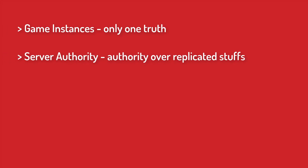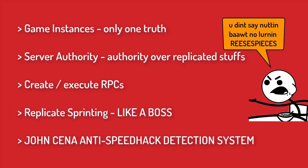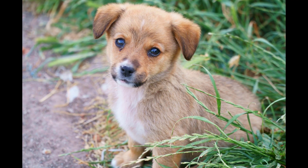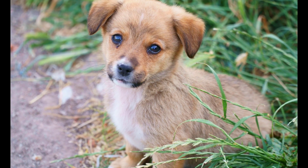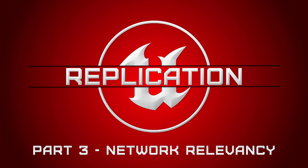So let's quickly recap. In this video you learned about game instances and the importance of having one true version of the game; when and why the server has authority over certain actors, components, or variables; how to create and execute RPCs; how to properly and improperly replicate sprinting; and finally how to take incorrect replication of sprinting and make it cheat-proof. Thanks again for watching — if you learned anything today smash that like button. I'll see you guys in the next one, but until then I'm not gonna lie it may be a very long time. Peace.